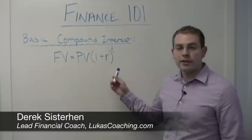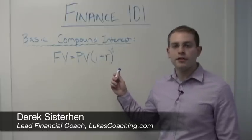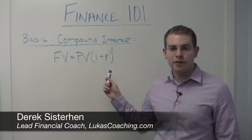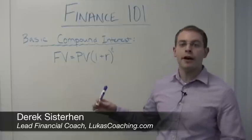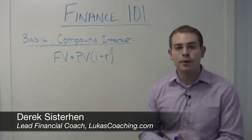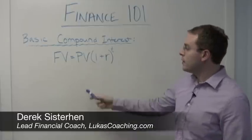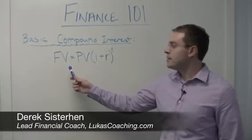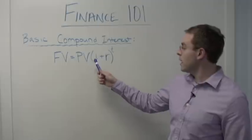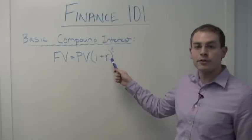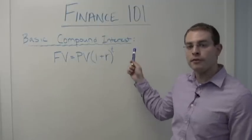What I have on the board here is the equation, the formula for computing basic compound interest. Now I know what you're thinking, Derek, what is this algebra calculus business and why are you hitting me with it so early in the morning? This says that future value is equal to the present value times 1 plus the interest rate raised to the term of the investment.